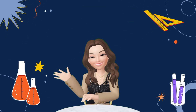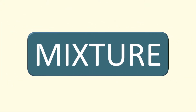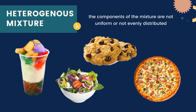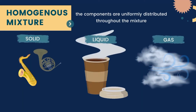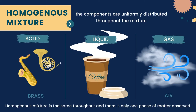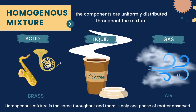Welcome to our new video. In our previous discussion, we learned that a mixture is classified into homogeneous and heterogeneous mixtures. A heterogeneous mixture is one in which the components are not uniform or evenly distributed. On the other hand, a homogeneous mixture is one in which the components are uniformly distributed throughout the mixture.